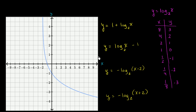Now let's graph some of these points. When x is 8, y is 3. When x is 4, y is 2. When x is 2, y is 1. When x is 1, y is 0. I think you can see the general shape forming. When x is 1/2, y is negative 1. When x is 1/4, y is negative 2. When x is 1/8, y is negative 3. So you have a graph that looks something like this — connecting the dots.